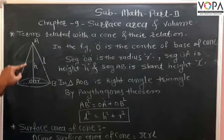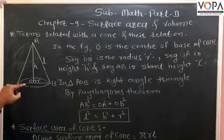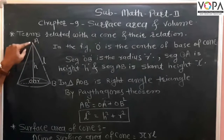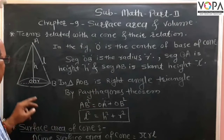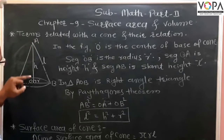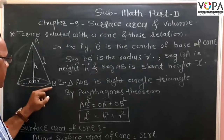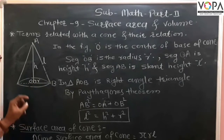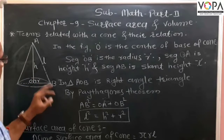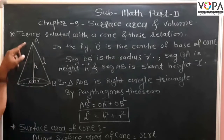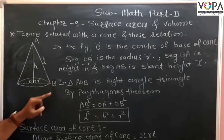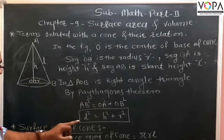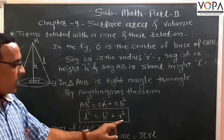In the figure, triangle AOB is a right-angled triangle, and segment AO is perpendicular to segment OB. By the Pythagorean theorem, AB² = AO² + OB², therefore L² = S² + R².